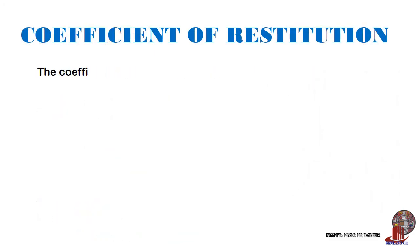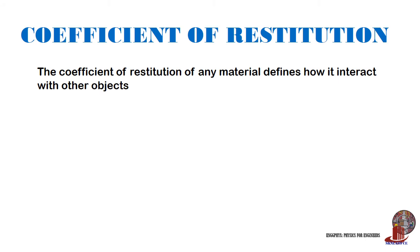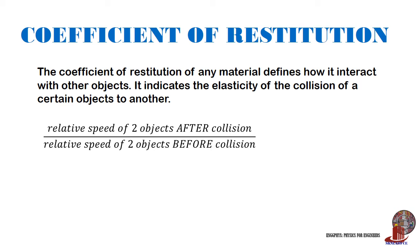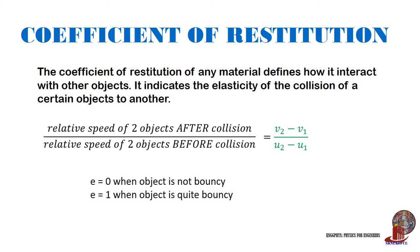The last topic in this module is the coefficient of restitution, which describes the bounciness of objects. The formula E is given as the ratio between the relative speed of two objects after collision to that before their collision. In formula: V2 minus V1 equals E times (U2 minus U1), where E equal to 0 means the object is not bouncy, and E equal to 1 means the object is quite bouncy.